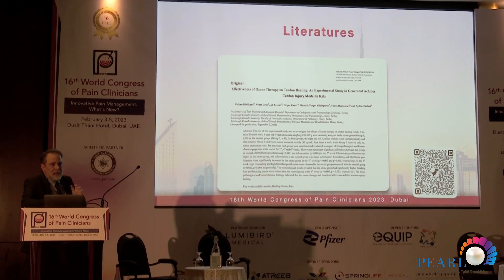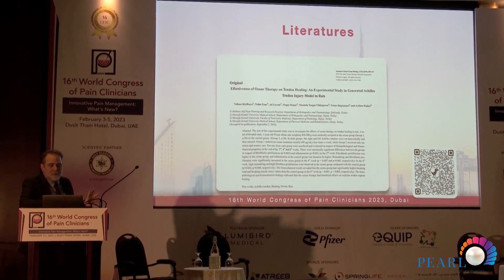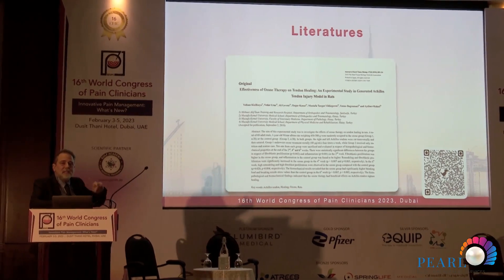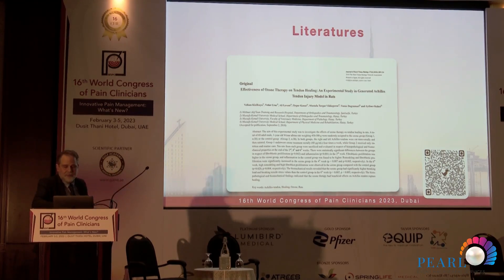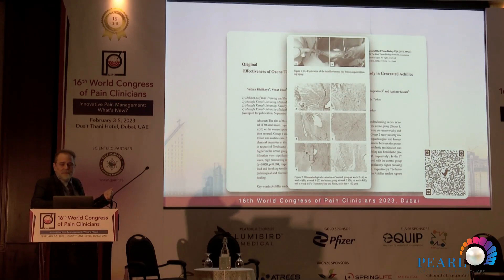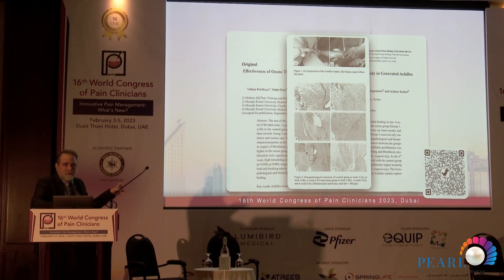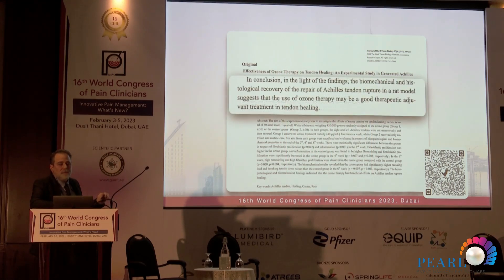This is an experimental animal study about systemic ozone therapy on tendon healing. Rectal insufflation — one of the ways of systemic use of ozone therapy — was applied. This figure shows the exploration of the Achilles tendon and the repair process after injury. You can see the histopathological comparison of the control group and the ozone group. The authors conclude that the ozone therapy group showed significantly improved Achilles tendon healing after rupture.